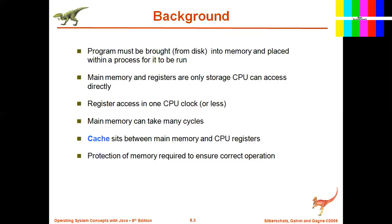Whatever data is required by the CPU must be in main memory — it should not be in secondary storage. But most of our data is stored in secondary storage. When we want the CPU to execute, we have to bring our data from secondary storage to primary storage. A program must be brought into memory and placed within a process for it to run. Main memory and registers are the only storage the CPU can access directly.